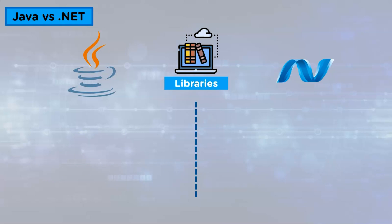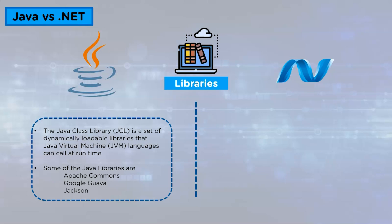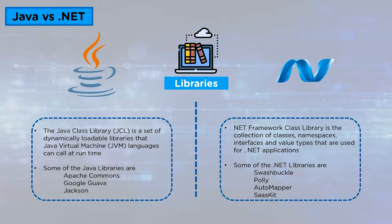The next parameter is Libraries. The Java class library is a set of dynamically loaded libraries that Java Virtual Machine languages can call at runtime — essentially a collection of classes written by somebody else. Some of the libraries used in Java are Apache Commons, Google Guava, and Jackson. Whereas in the .NET Framework, the class library is a collection of classes, namespaces, interfaces, and value types used for .NET applications. Some of the .NET libraries are Swashbuckle, Polly, AutoMapper, and SASKit.